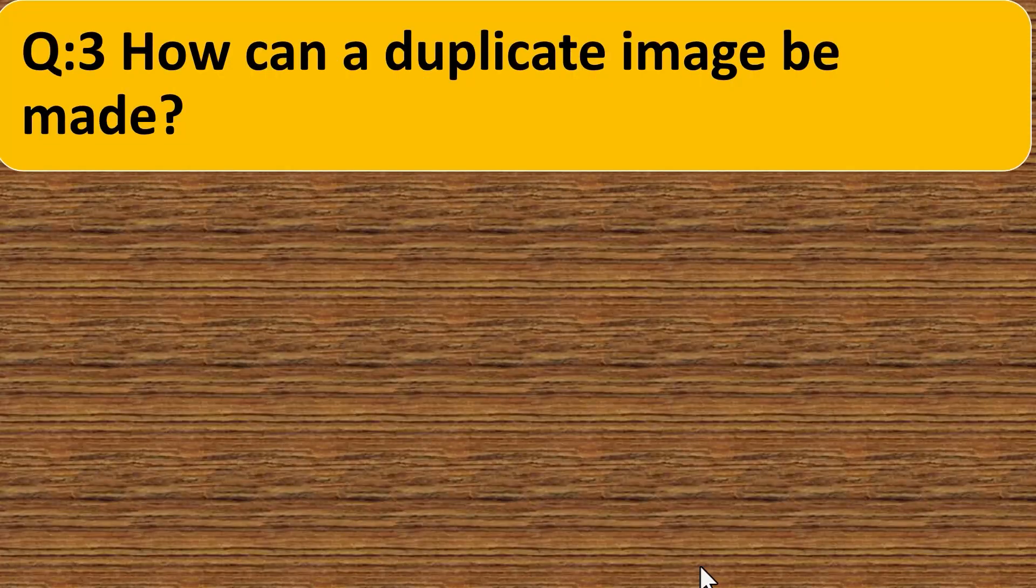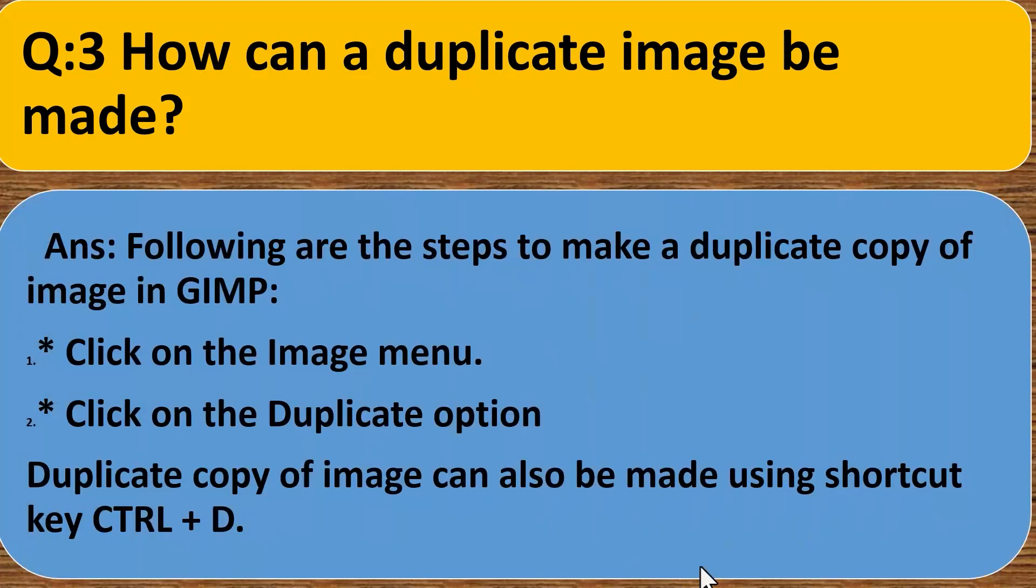Question third. How can a duplicate image be made? Answer. Following are the steps to make a duplicate copy of image in GIMP. Click on the image menu. Click on the duplicate option. Duplicate copy of image can also be made using shortcut key Ctrl plus D.